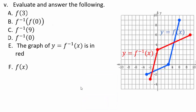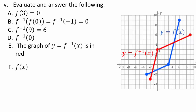f of 3: x coordinate is 3; look at the blue graph — that's the point 3, 0, so y equals 0. For f inverse of f of 0: f of 0 has x equals 0, y equals negative 1. So we need f inverse of negative 1; on the red graph, x equals negative 1 gives y equals 0. So the answer is 0. f inverse of 9: x equals 9 on the red graph gives y equals 6. f inverse of 0: x equals 0 on the red graph gives y equals 3.